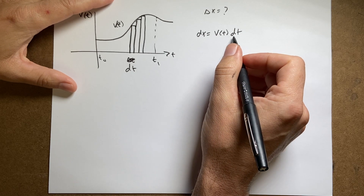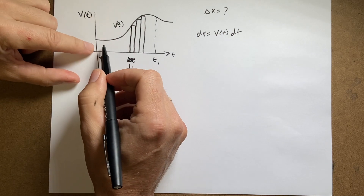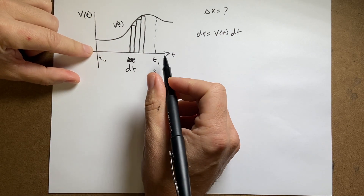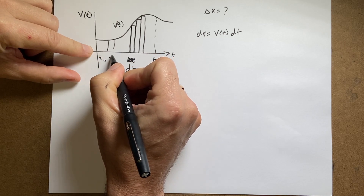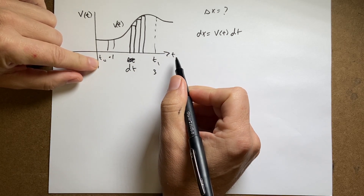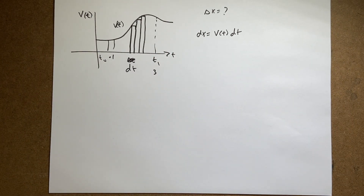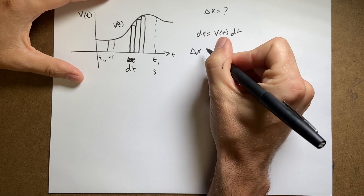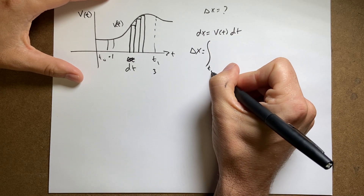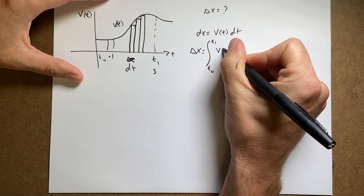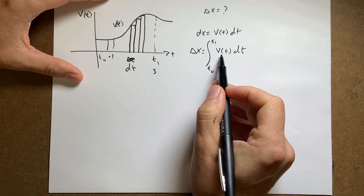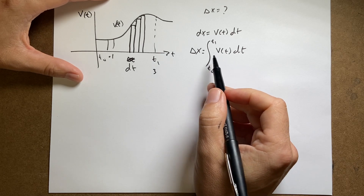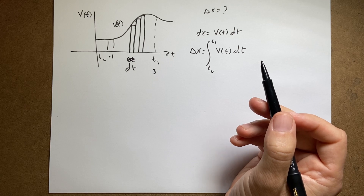As delta t goes to zero, we get a sum of infinite terms. If this interval is 3 seconds and I use time steps of 0.1 seconds, I'd have 30 rectangles to add up. The smaller the time steps, the better the answer. In the limit, delta x is the sum which becomes an integral from t₀ to t₁ of v(t) dt. But now I'm stuck with: how do you evaluate an integral — how do you do an infinite sum?